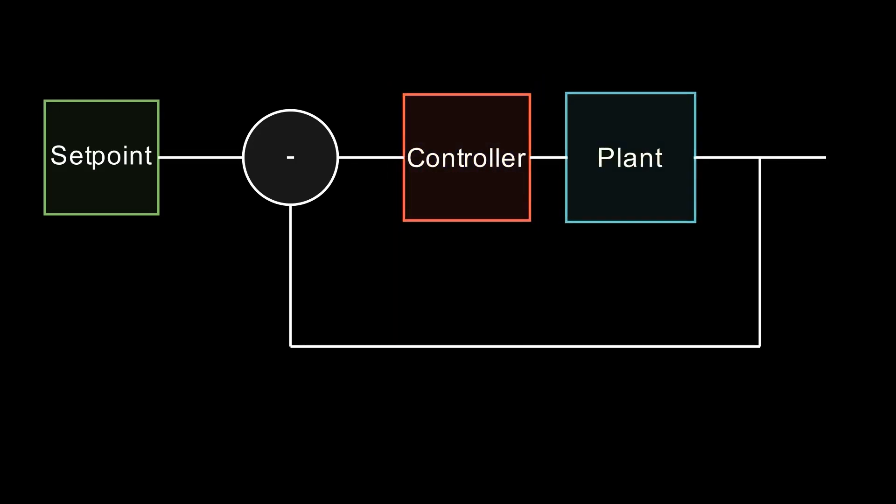Finally, this signal is sent to our plant, the system we are trying to control. This could be something like a DC motor. After many iterations of this loop, your system will converge to the desired state.